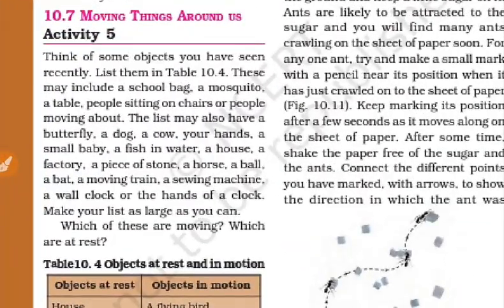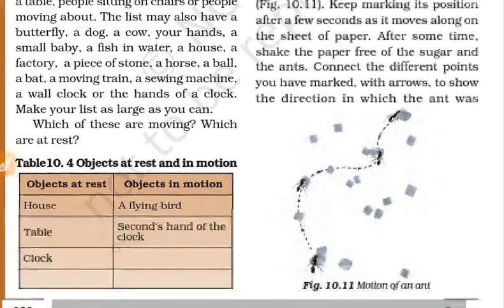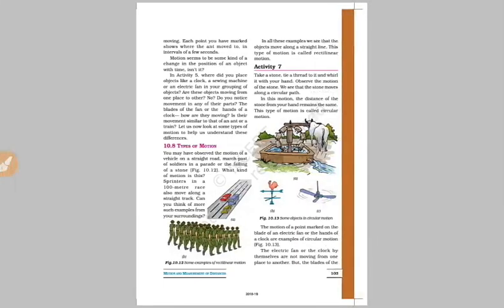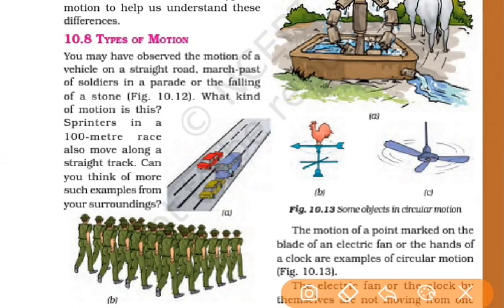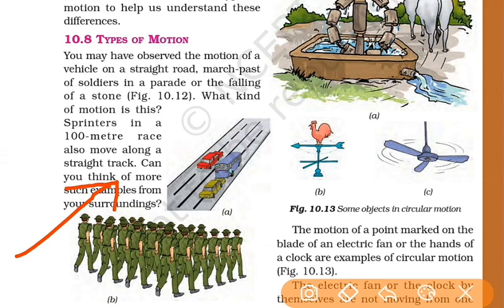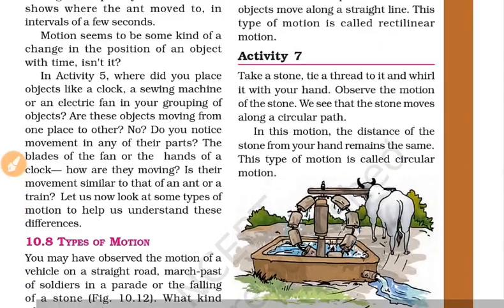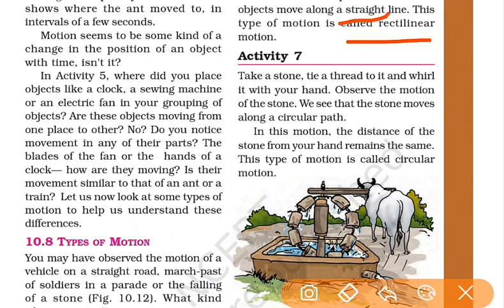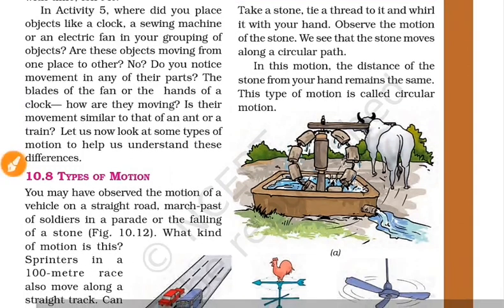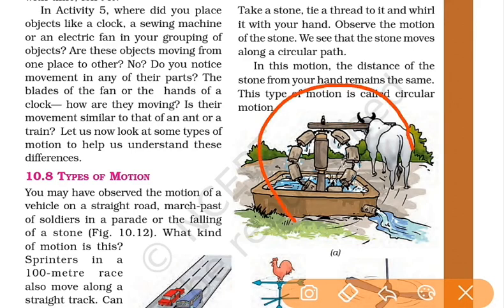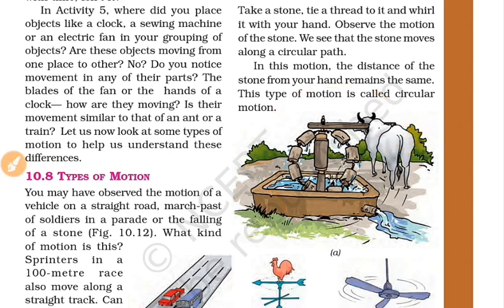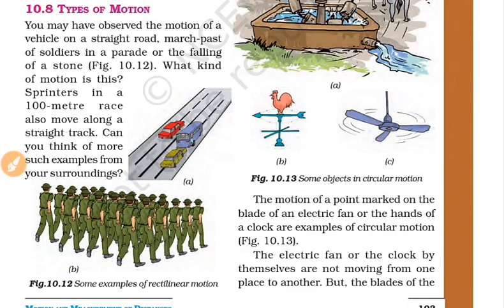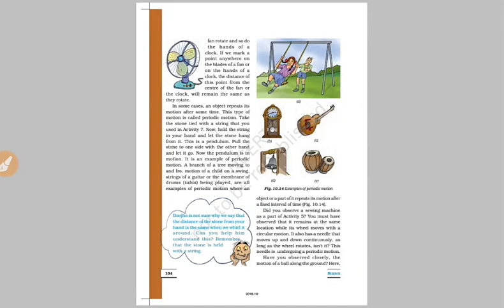Now we learn about types of motion. There are different types of motions. The first is linear motion — also called rectilinear motion. For example, a car moving straight or soldiers marching in a straight line. This is rectilinear or straight-line motion.